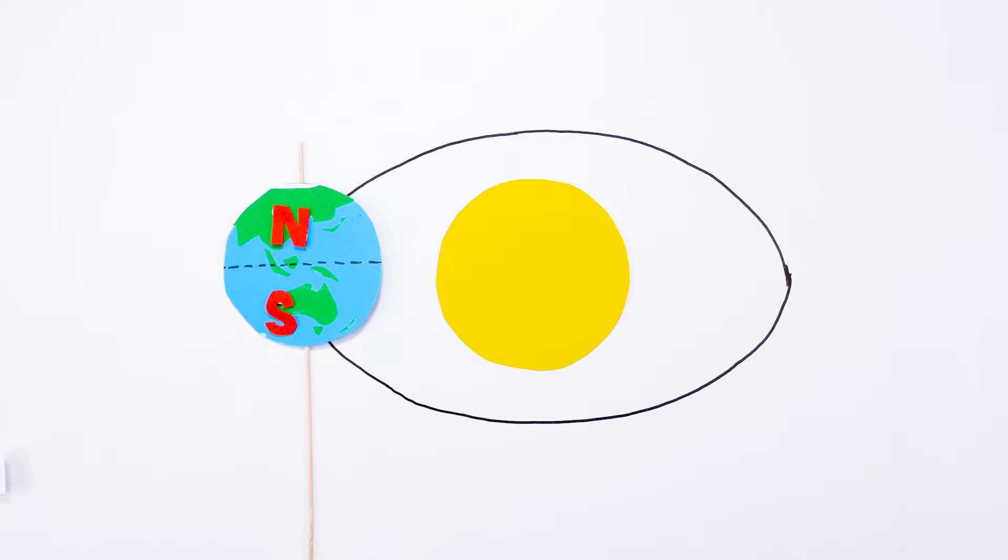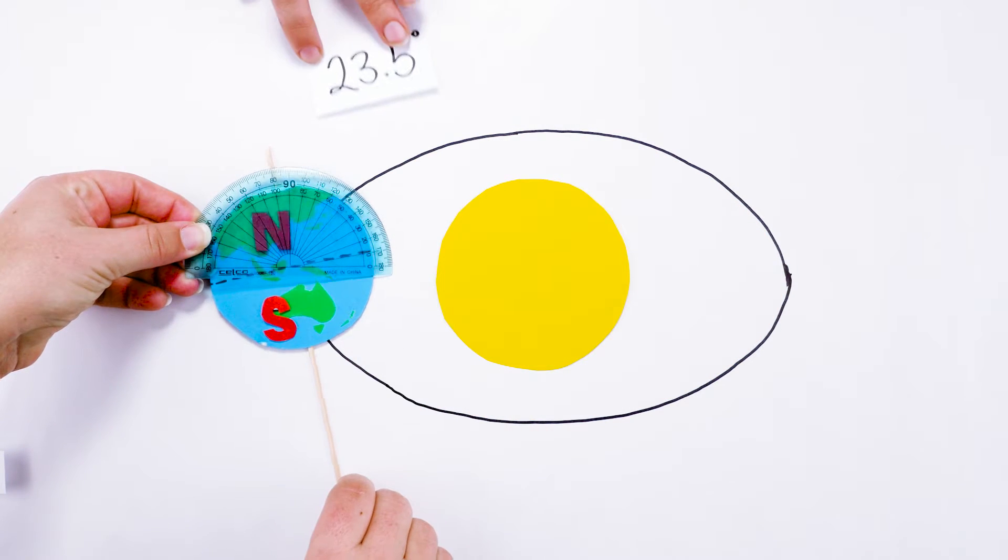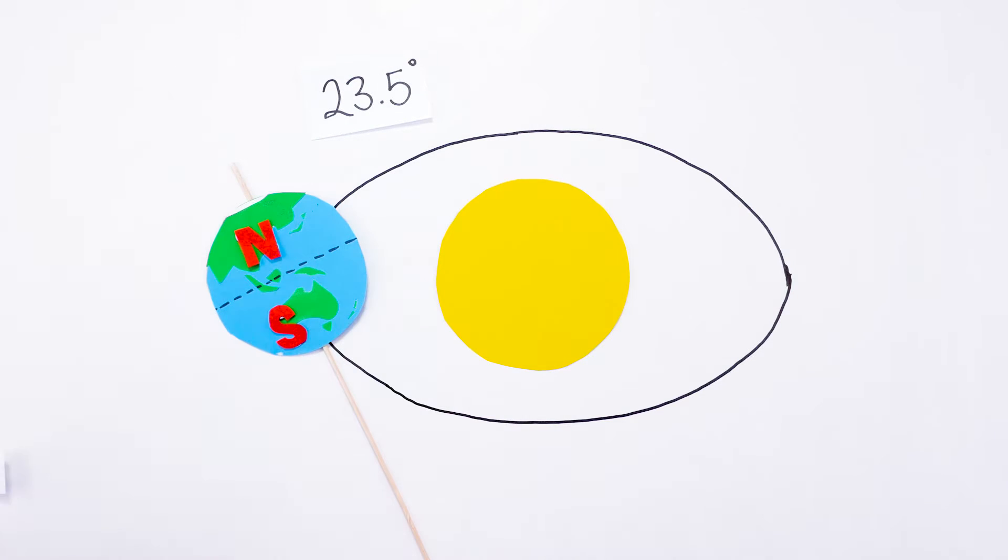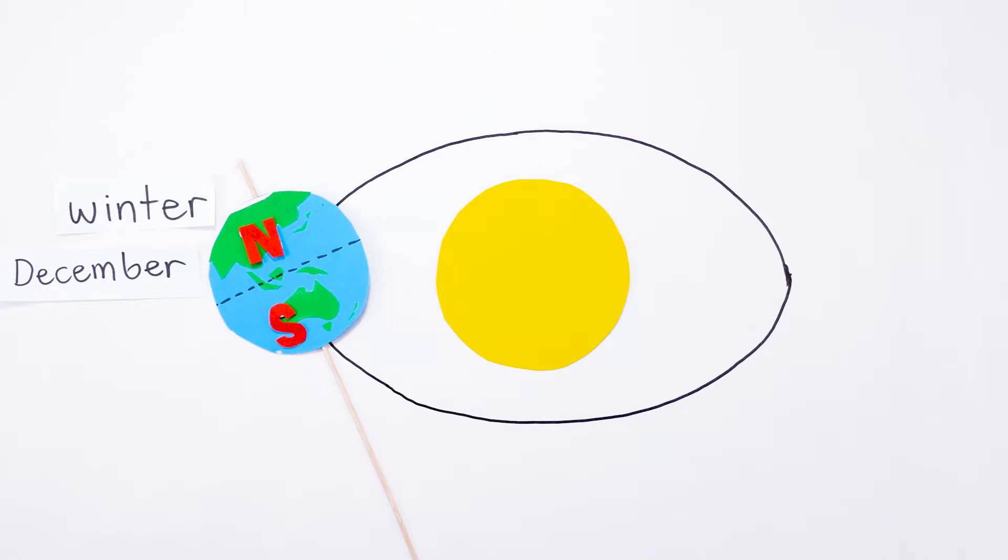But the Earth's axis is tilted at an angle of 23.5 degrees. So in December the northern hemisphere is pointed slightly away from the Sun and it has winter. The southern hemisphere is pointed more towards the Sun and it has summer.